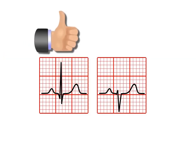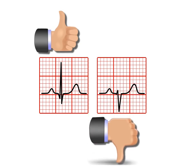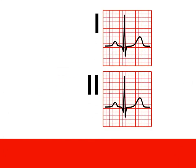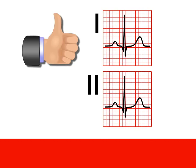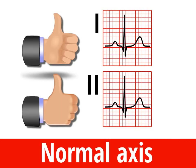Use your thumbs. Put a thumb up for a positive lead or down for a negative. If leads 1 and 2 are both positive, that's 2 thumbs up and the axis is normal.